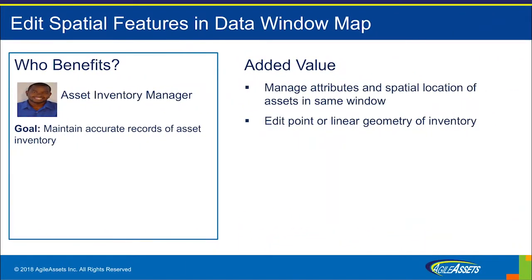In version 7.2, we added the ability to edit the location and attributes of features in the GIS Explorer map screen. To provide an inventory manager with better visibility into the location of their asset inventory, the bound map screen shows a spatial representation of assets in the data grid. So while reviewing the details of a specific asset, if the inventory manager determines that the spatial location is inaccurate, rather than going to the GIS Explorer map for that asset class, they can edit the location in the same inventory screen by simply selecting the location and dragging it to the new location for a point asset, or updating the beginning or end mile point for a linear asset or event.